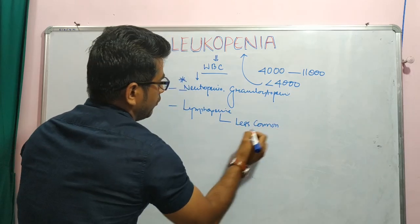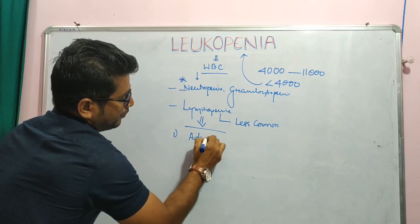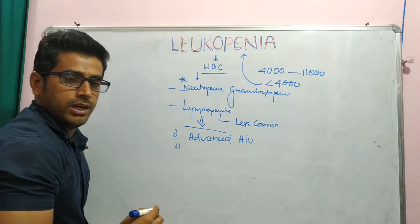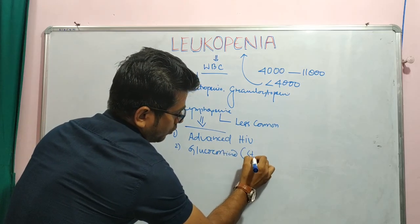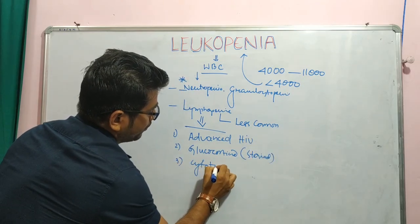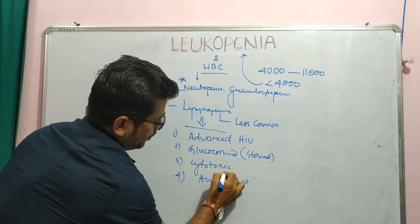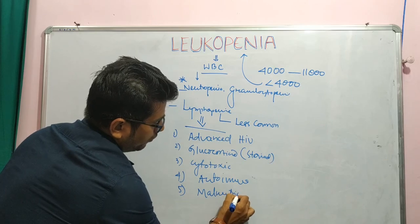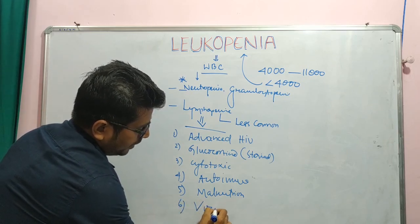Let us see the causes of lymphopenia. Number one is advanced stage HIV. Number two, if the patient is treated with glucocorticoids, any steroid, or any cytotoxic drug, it will cause lymphopenia. Number four, if the patient is suffering from any autoimmune disease. Number five, malnutrition is another important cause. The most important cause of lymphopenia is viral infection.